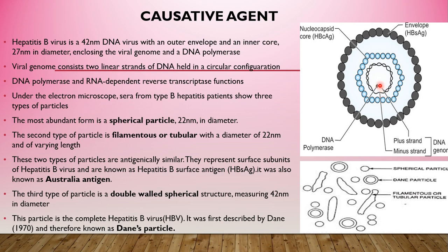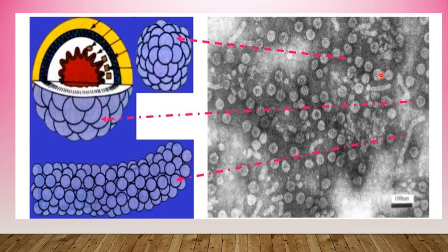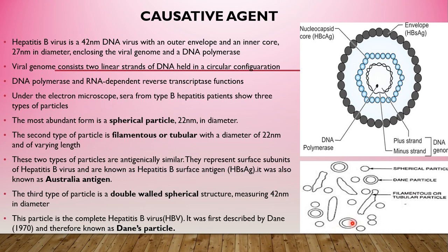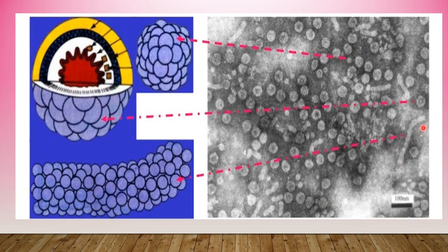Moving to the photographic picture: this is an electron microscopic image showing the three particle types — Dane particles (double-walled spherical particles), spherical particles, and filamentous particles. This is how they appear under the electron microscope.